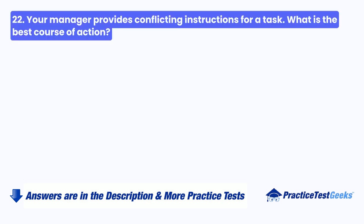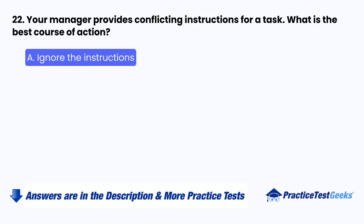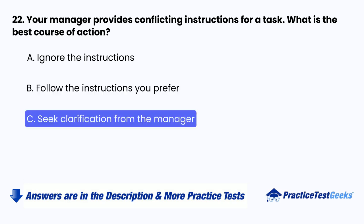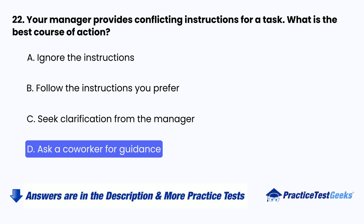Question 22: Your manager provides conflicting instructions for a task. What is the best course of action? A. Ignore the instructions. B. Follow the instructions you prefer. C. Seek clarification from the manager. D. Ask a co-worker for guidance.